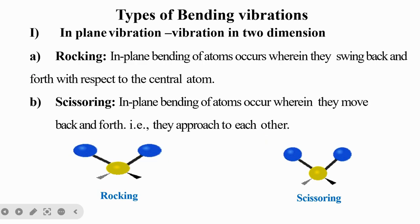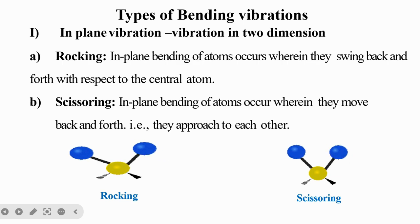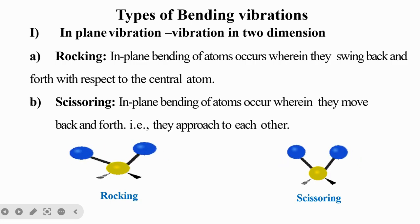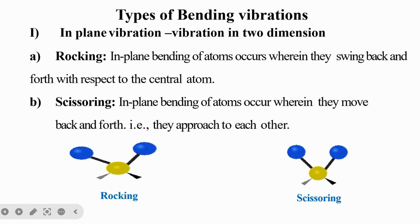Bending vibration is of two types: in-plane vibration and out-of-plane vibration. In-plane vibration — which takes place in two dimensions only — is of two types: rocking and scissoring. In rocking, in-plane bending occurs wherein atoms swing back and forth together with respect to the central atom. In scissoring, atoms move in-plane but approach each other or move away from each other, like the movement of a scissor.